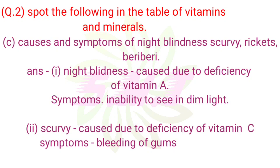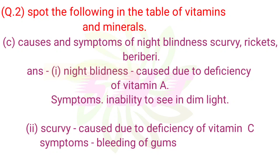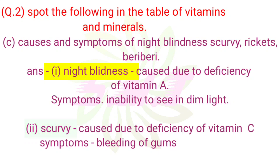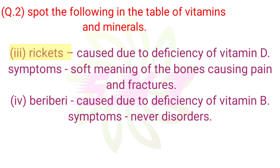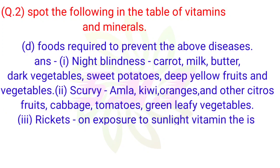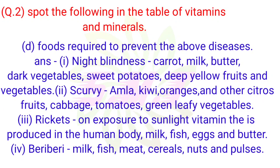C. Causes and symptoms of night blindness, scurvy, rickets, and beriberi. Answer: 1. Night blindness — caused due to deficiency of Vitamin A; Symptoms: inability to see in the night. 2. Scurvy — caused due to deficiency of Vitamin C; Symptoms: bleeding of gums. 3. Rickets — caused due to deficiency of Vitamin D; Symptoms: softening of the bones causing pain and fractures. 4. Beriberi — caused due to deficiency of Vitamin B; Symptoms: nerve disorders.